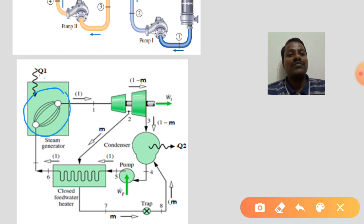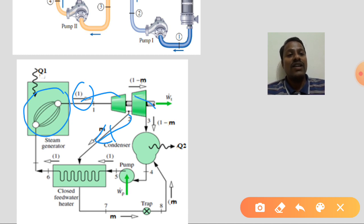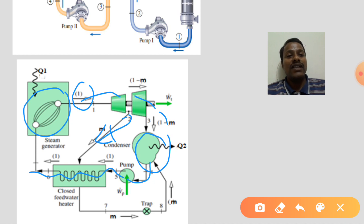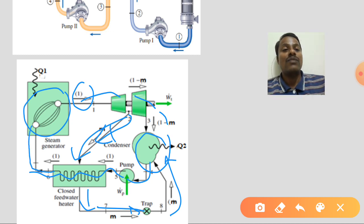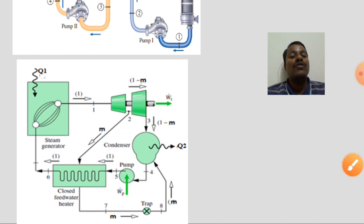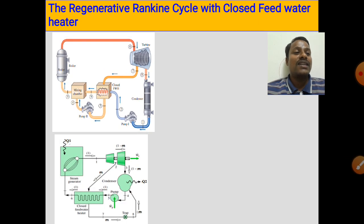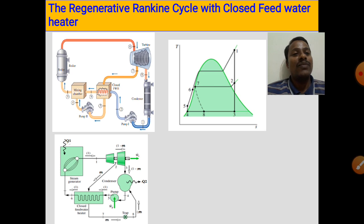In the textbook schematic for the closed feed water heater cycle: steam at state 1 from the boiler undergoes expansion in the first stage of the turbine. At state 2, steam is bled and passes through the closed feed water heater. The remaining steam expands further, exits at state 3, enters the condenser, and the condensate goes through pump 1, then through the closed feed water heater tubes. The bled steam condenses, is pumped by a second pump back into the cycle, and the feed water enters the boiler at state 1. The corresponding temperature-entropy diagram is also shown.